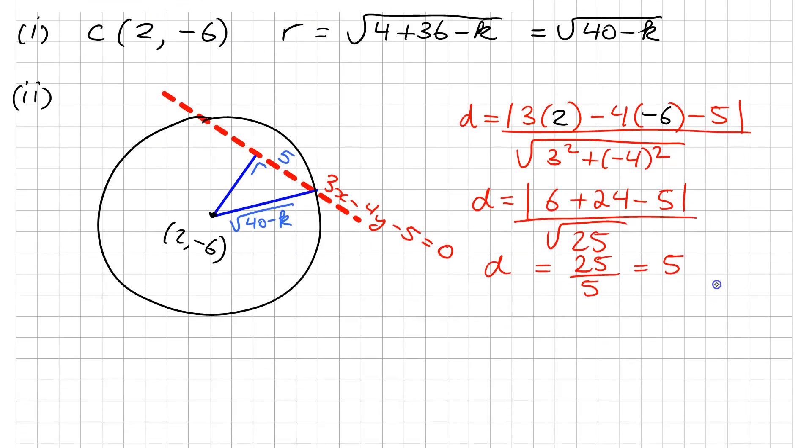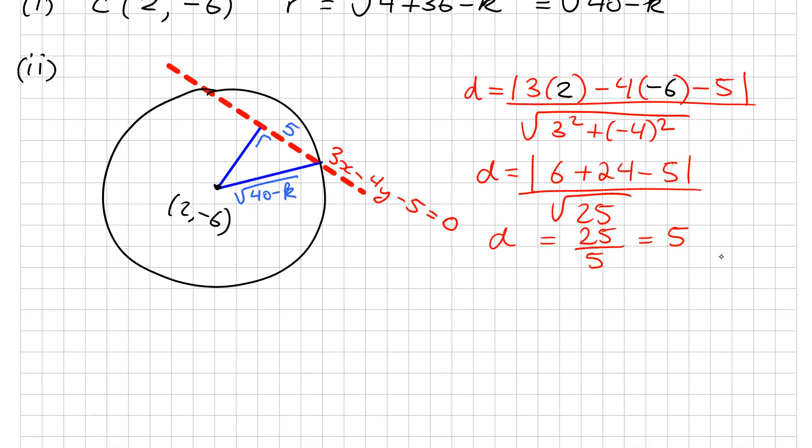Okay, so now once I have my D to be 5, I can now use Pythagorean theorem. Pythagorean theorem tells me that, and now be careful, 40 minus K is the hypotenuse, so the square root of 40 minus K squared is equal to...